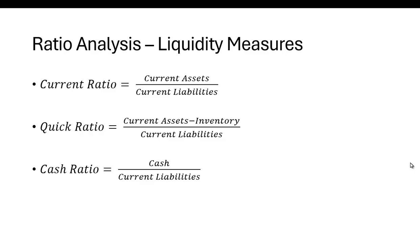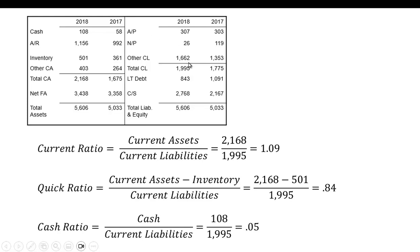Then there's the cash ratio, which is just cash divided by current liabilities. Looking at a balance sheet example: for the current ratio, total current assets of 2,168 divided by current liabilities of 1,995 gives 1.09. By the gauge of 2, this is a bit low — though it's not clear 2 is the magic number anymore. The quick ratio subtracts inventory of 501 from 2,168, divided by current liabilities, giving 0.84. The cash ratio is cash of 108 divided by 1,995, giving 0.05.